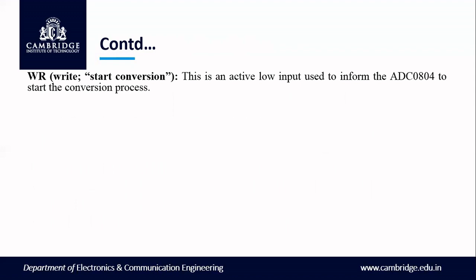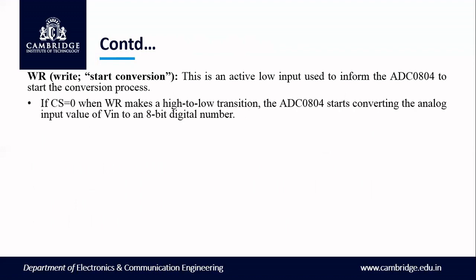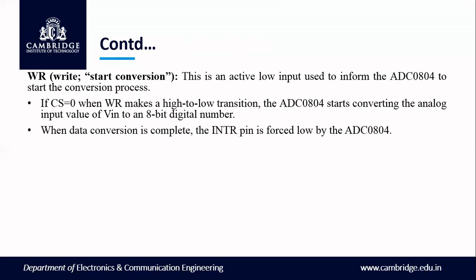The WR pin — write — is called the start of conversion. It is an active low input used to inform the ADC to start the conversion process. When chip select is 0 and WR makes a high to low transition, the ADC starts converting the analog input value of VIN to an 8-bit digital number. When data conversion is complete, the INTR pin is forced low by ADC0804. INTR is used for monitoring whether conversion is done or not.